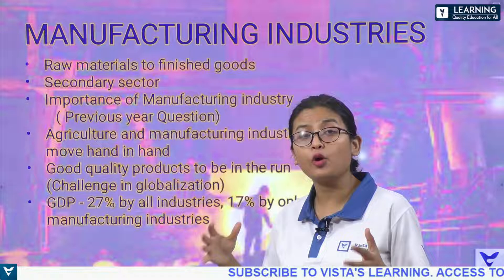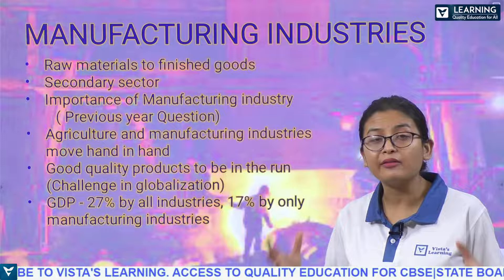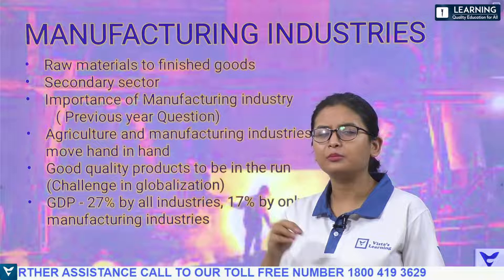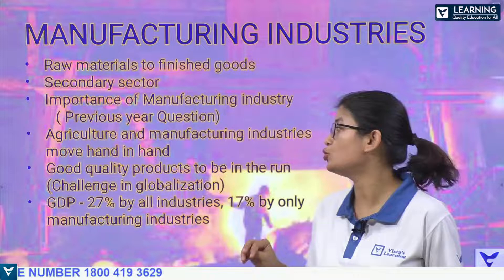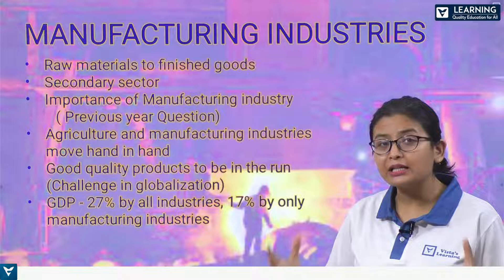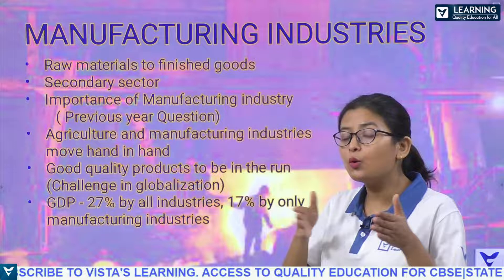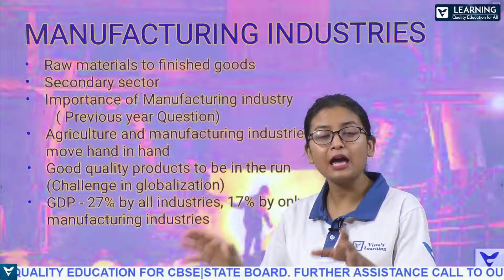When you convert raw cotton into textiles or bandages, that raw material from the primary sector moves into the secondary sector. This shows how agriculture and manufacturing industries move hand in hand, growing together. With industrialization happening all over the world, urbanization is also happening — people are attracted to places where industries are present because industries create job opportunities.